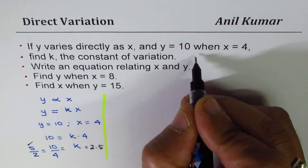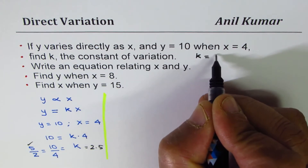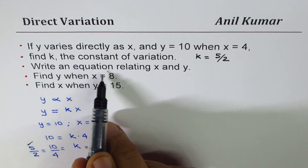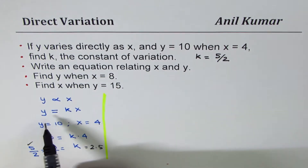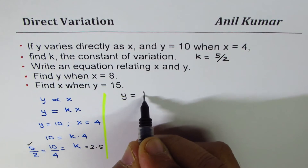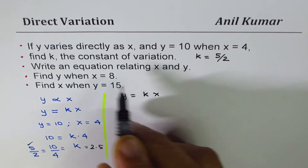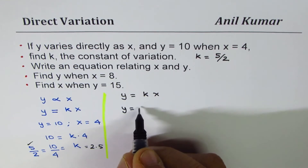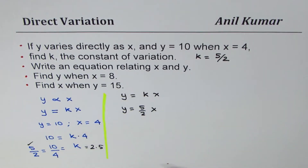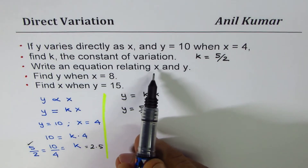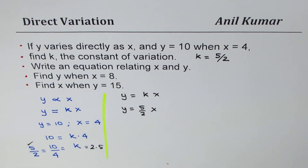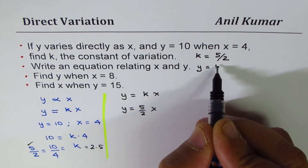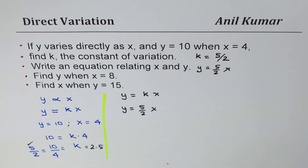So we have found the value of k equals 5 over 2. The next part is to find an equation relating x and y. The relation is always y equals k times x for direct variation. Since k is 5 over 2, we can write this as y equals 5 over 2 times x. That becomes the equation relating x and y.